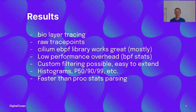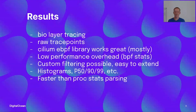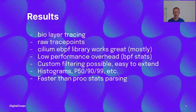To summarize: we do tracing on the block IO layer using raw trace points. We decided to use Cilium eBPF, which worked greatly. We measured that the performance overhead is quite low using BPF stats. We have the possibility for custom filters, it's easy to extend the BPF code, and it's also faster when passing processes.